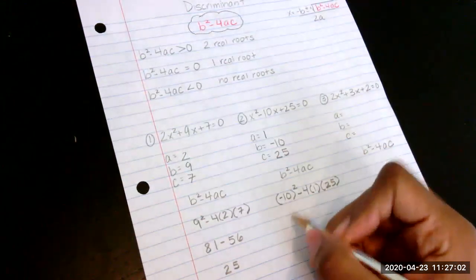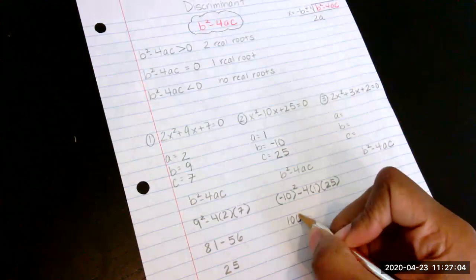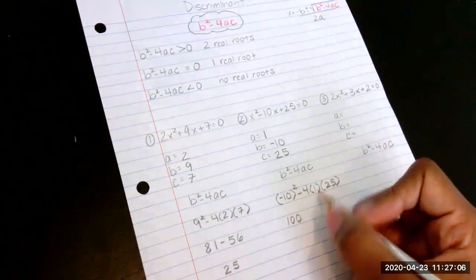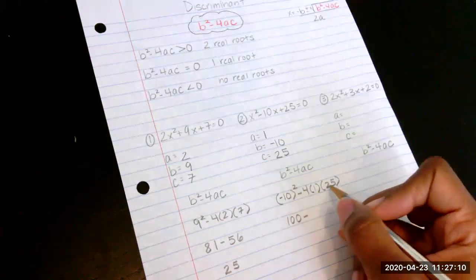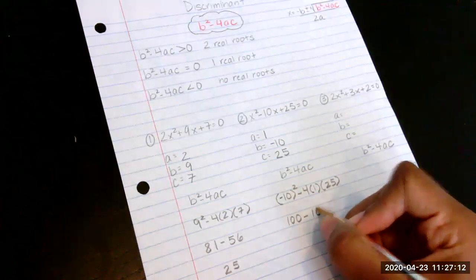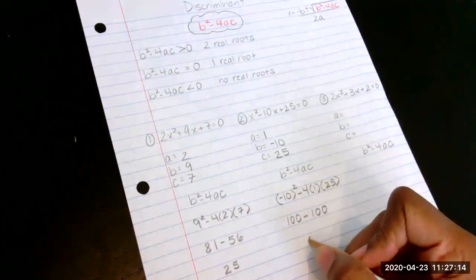And then when I do the math, negative 10 squared is negative 10 times negative 10, which is 100. And 4 times 1 is 4 times 25 is 100. And then if I subtract those, I get 0.